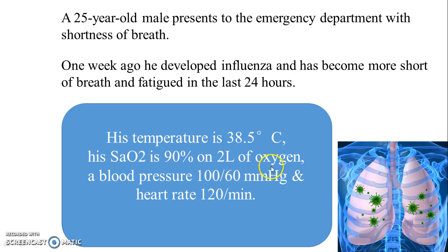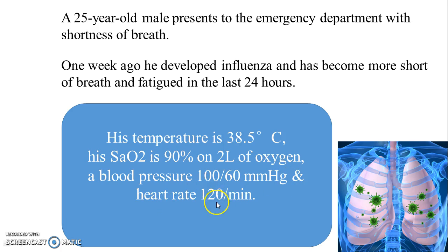He is receiving oxygen through a nasal prong at two liters, and on this oxygen his saturation reads 90%. His blood pressure is 100 over 60 mmHg and heart rate is 120 per minute. This is one manifestation of how a patient with bacterial pneumonia can present in the emergency department or general practice setting.